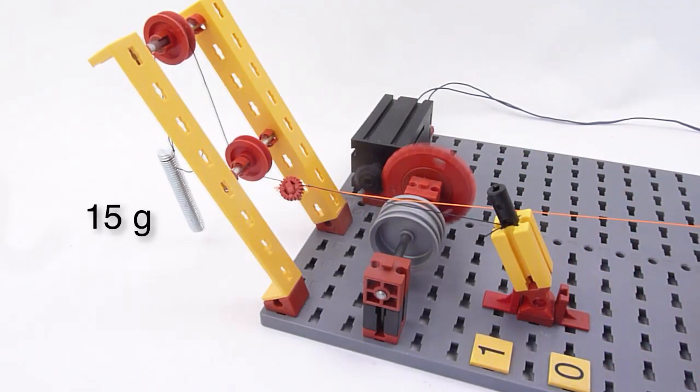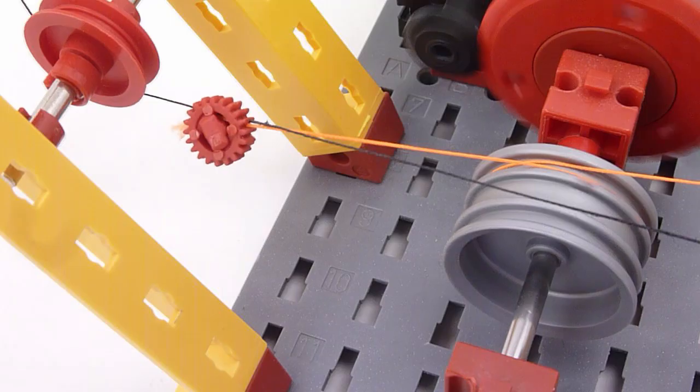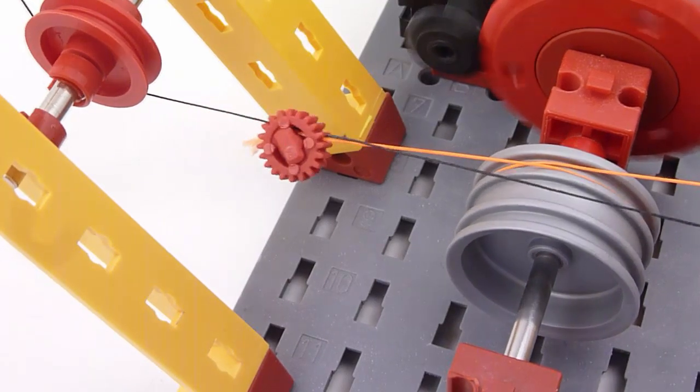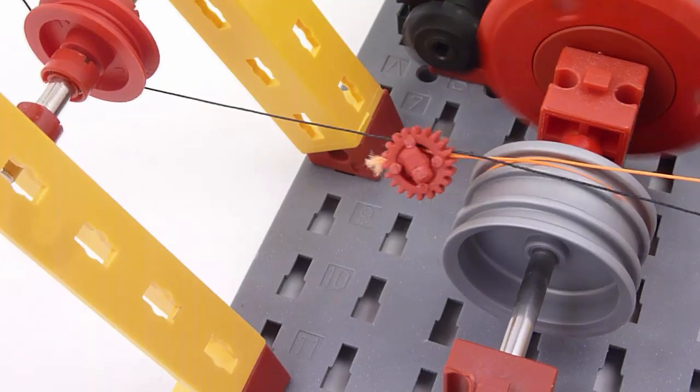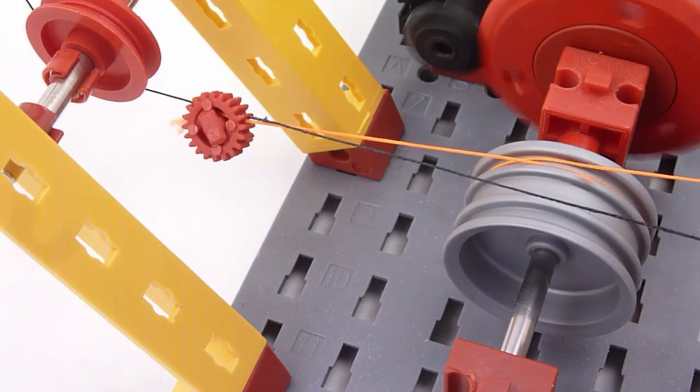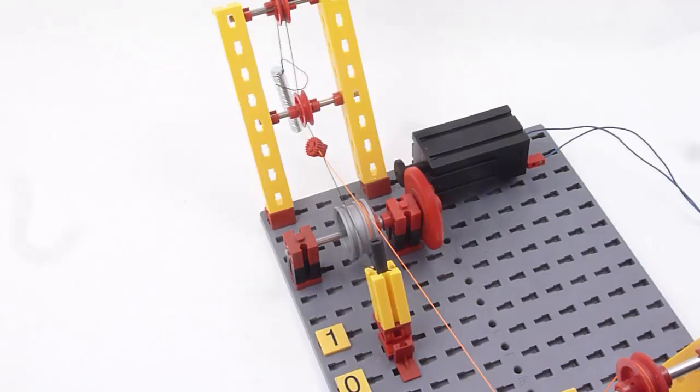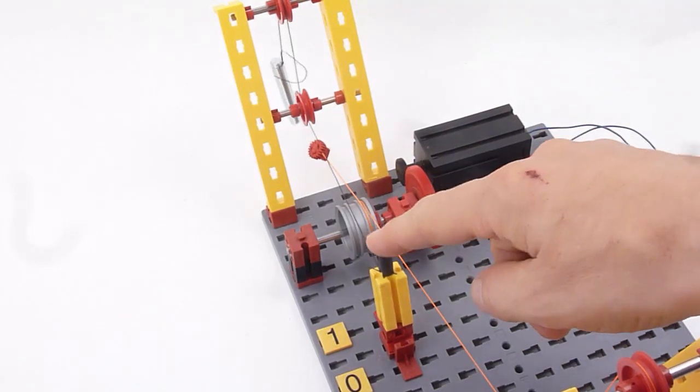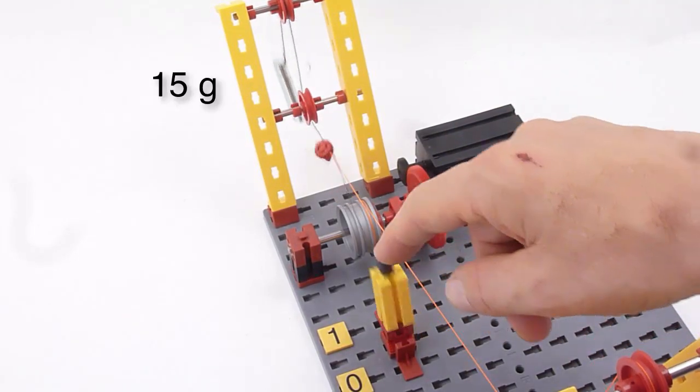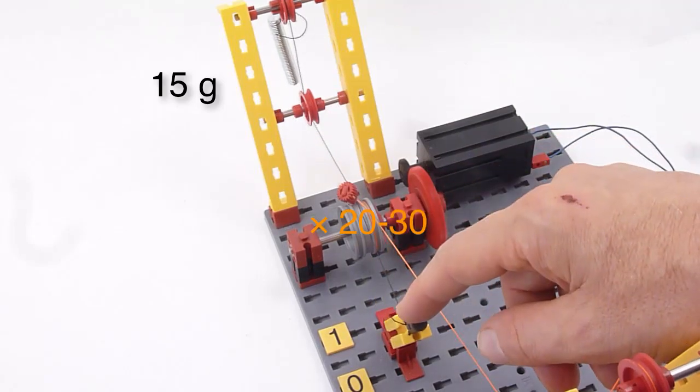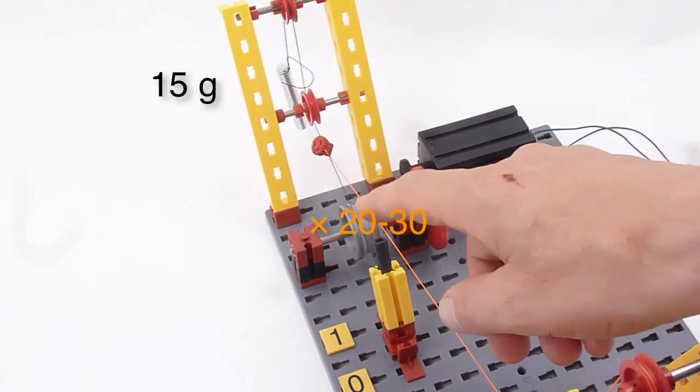But the 15 grams do not just pull at the lever. The orange string is clamped to the black string and wound twice around the rotating drum. This way the force of 15 grams is amplified by a factor of about 20 to 30.